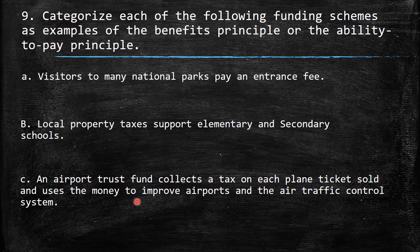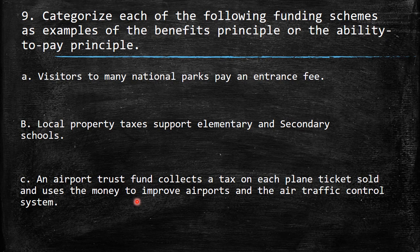The ninth part, the last one: categorize each of the following funding schemes as examples of the benefits principle or the ability to pay principle. The benefits principle is basically: you pay because you use it. For example, you go to a park and you pay a tax — just the people that pay go to this park. The ability to pay principle means that just because you have a higher income than other people, you need to pay to support a service, even if you don't directly benefit from it.